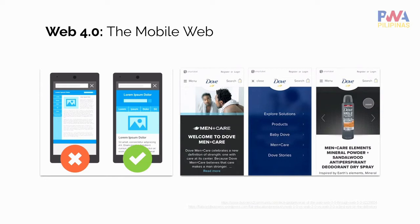For example, Instagram. On the desktop website of Instagram you can browse photos, comment, and like, but you cannot upload photos. But using the mobile website of Instagram, you have the ability to upload photos. Also, new concepts on the mobile web have been introduced, like accelerated mobile pages, SPAs or single-page applications, and progressive web apps.